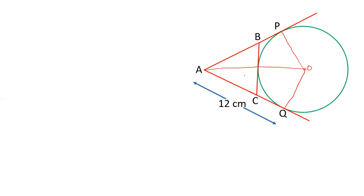Now in triangle AOP and triangle AOQ, OP is equal to OQ. They are radii of the circle.